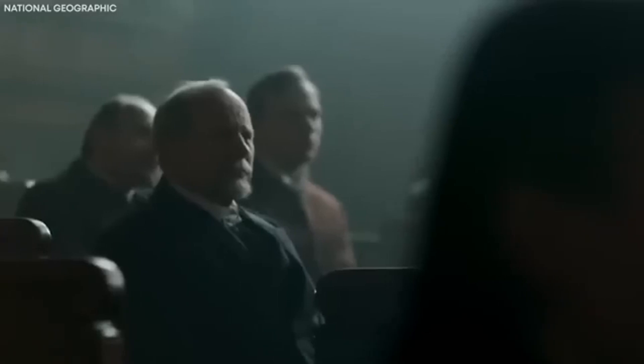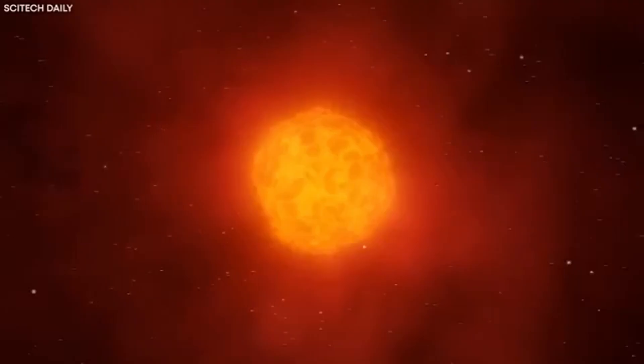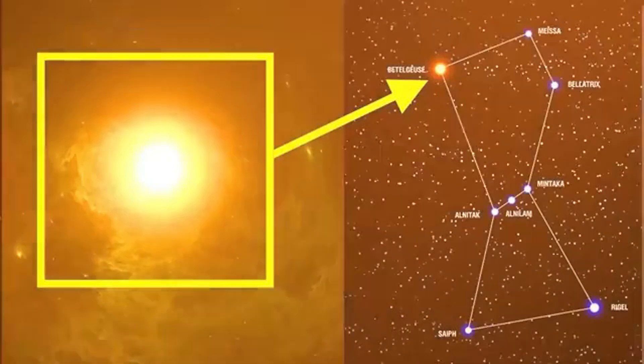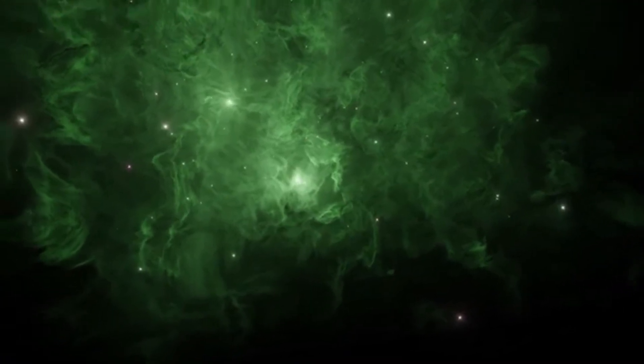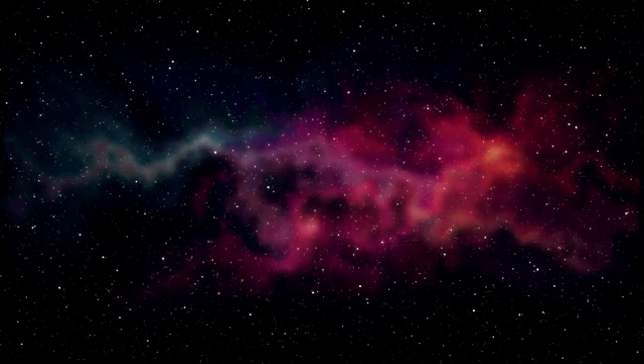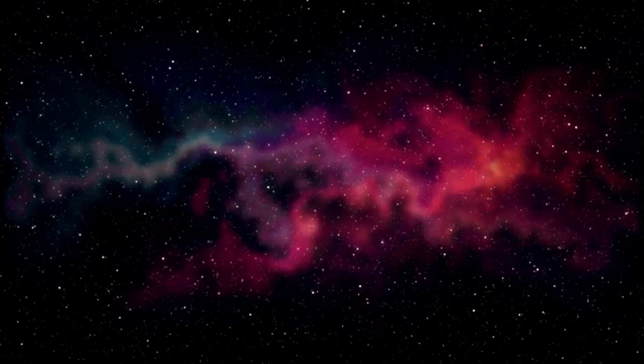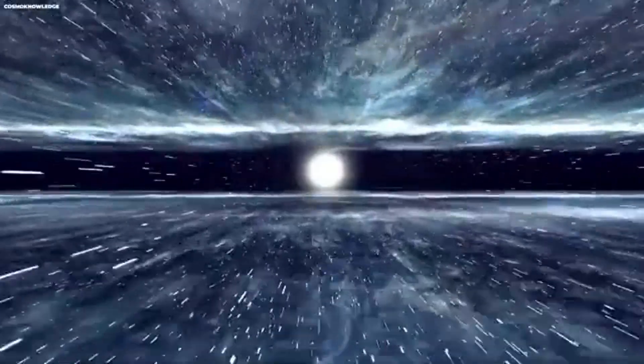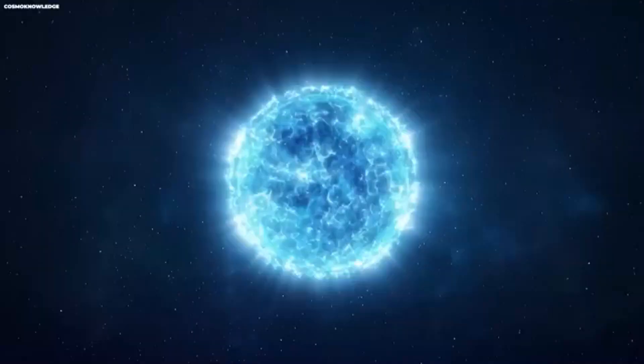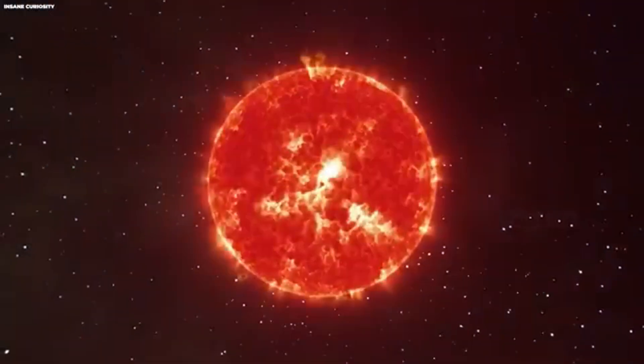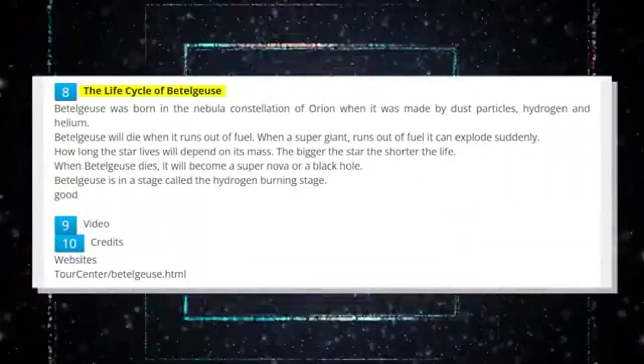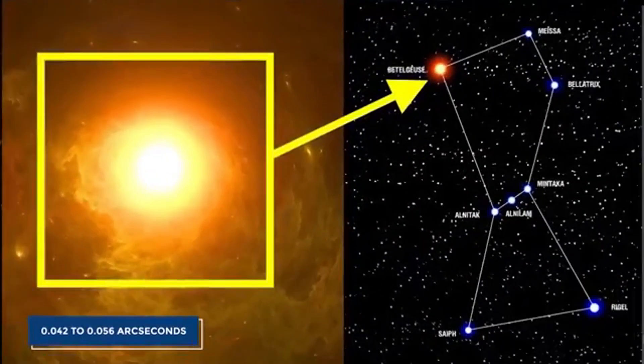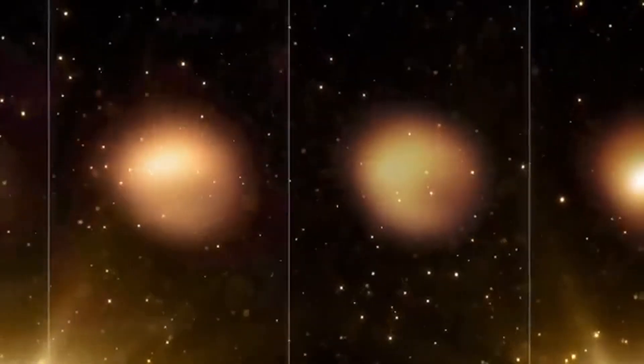The scale of this mass ejection and the subsequent dimming sparked discussions among astronomers about whether this event could be a precursor to a supernova explosion. The proximity of Betelgeuse, about 725 light-years from Earth, adds to the intrigue, as any such explosion would be visible from Earth and provide a rare opportunity to observe a supernova up close. Yet, the question remains, what does this dimming event portend for Betelgeuse's future? Is it an indicator of an impending supernova, or simply a unique episode in the star's long and complex life?